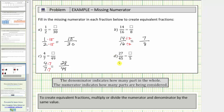For our last example, we're given the fraction twenty-seven forty-fifths. We want an equivalent fraction with a denominator of five. Because forty-five divided by nine equals five, if we divide the numerator and denominator by nine, we can create an equivalent fraction with a denominator of five.